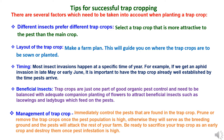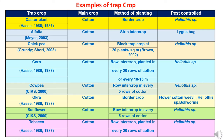Management of trap crops: Immediately control the pests that are found on the trap crop. Prune or remove the trap crops once the pest population is high; otherwise they will serve as a breeding ground and pests will attack the rest of your farm. Be ready to sacrifice your trap crop and destroy it once pest infestation is high. The trap crop may be harvestable or non-harvestable.